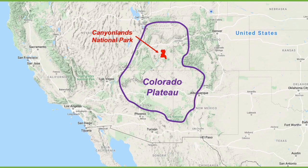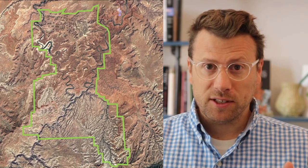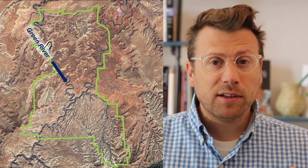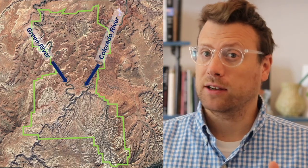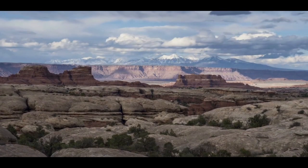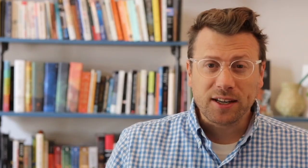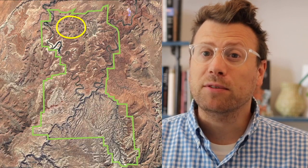Canyonlands National Park is one of the many parks and monuments on the Colorado Plateau. It's located at the confluence of the Green River and the Colorado River. The park contains many spires and buttes and canyons, but it also contains a very curious feature called Upheaval Dome.